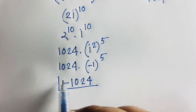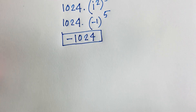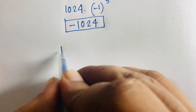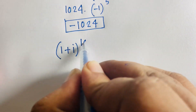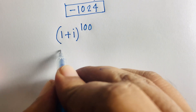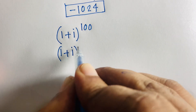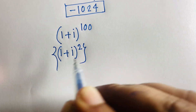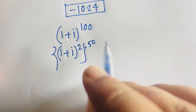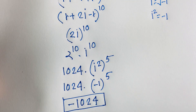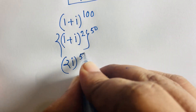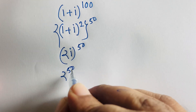Now let's solve another question: (1 + i)^100 = what. I can rewrite this as [(1 + i)^2]^50, since 2 times 50 equals 100. We already know (1 + i)^2 = 2i, so this becomes (2i)^50 = 2^50 times i^50.